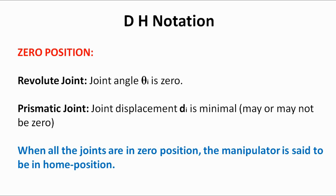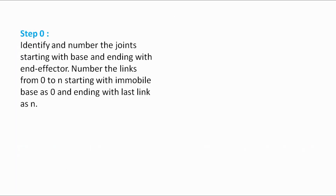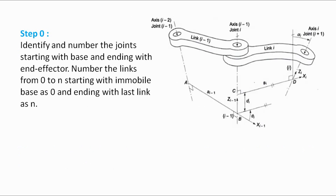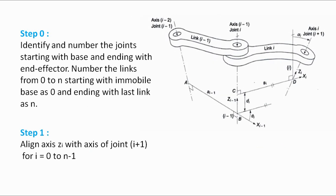Coming back to frame assignment, we will learn some steps. In step 0, identify and number the joints and links as discussed in previous lectures — link 0, link 1, link 2, up to link n. After numbering, the next step is to assign the Z-axis. The Z-axis is aligned with the joint axis: Zi is aligned with joint axis i, Zi-1 with joint axis i-1, and similarly Zi-2 with axis i-2.